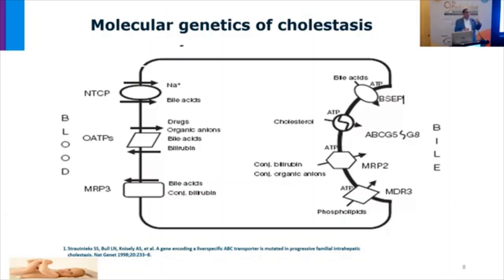For example, FIC1 and ATP8B1 transmit bile acid — if a mutation happens at this level, it will lead to familial intrahepatic cholestasis type 1. Also, some bile salt is secreted by BSEP (bile salt export pump); if a mutation occurs at this level, it will lead to familial intrahepatic cholestasis type 2. Bilirubin is transmitted by MRP2 (multidrug resistance protein type 2); mutation at this level leads to Dubin-Johnson syndrome. We will discuss this point later.